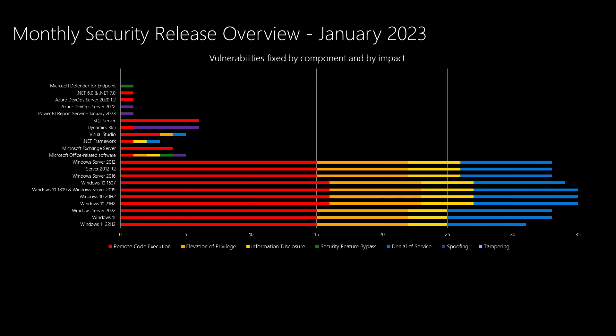Let's take a look at today's release. Those familiar with this slide will recognize that Windows products are on the bottom part of the slide, and products not serviced regularly are on the top. Windows products are averaging in the mid-30s for older products and mid-40s for newer ones like Windows 11 and Server 2022. Moving up the chart, Microsoft Office appears as usual with five vulnerabilities. Microsoft Exchange Server has a handful of remote code execution vulnerabilities. .NET Framework, Visual Studio, Dynamics 365, and SQL Server all have a handful, rounding out with Power BI Report Server, Azure DevOps, .NET 6, .NET 7, and Microsoft Defender for Endpoint.